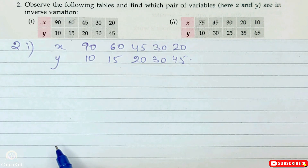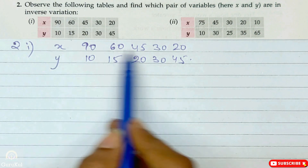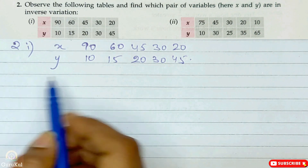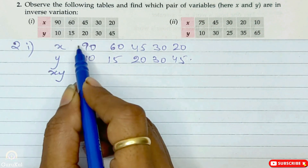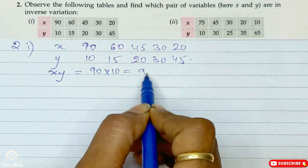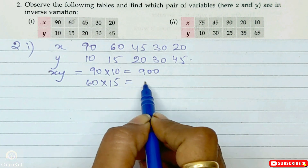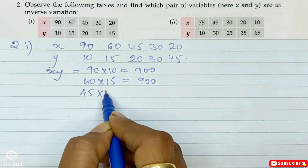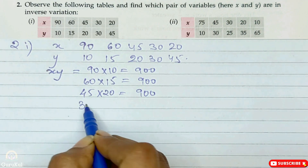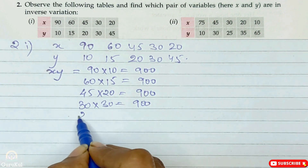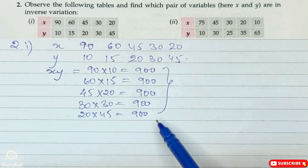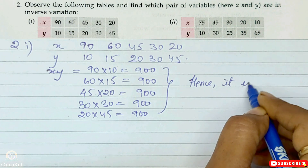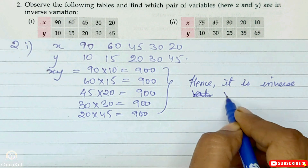Question number two: observe the following tables and find which pair of variables x and y are in inverse variation. In inverse variation, the product x times y should be constant throughout. So checking: 90 × 10 = 900; 60 × 15 = 900; 45 × 20 = 900; 30 × 30 = 900; 20 × 45 = 900. The value of x × y is constant throughout. Hence it IS inverse variation.